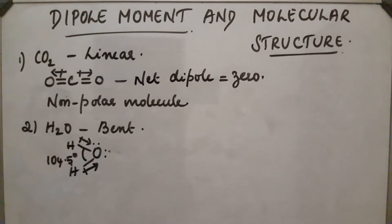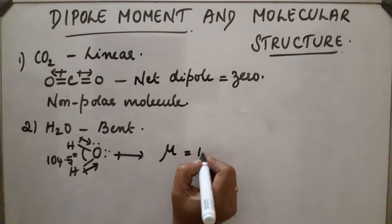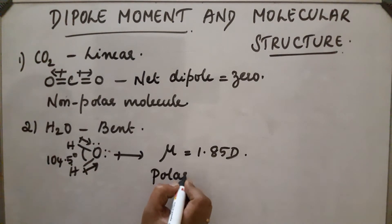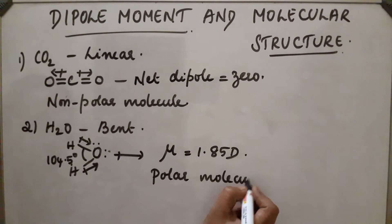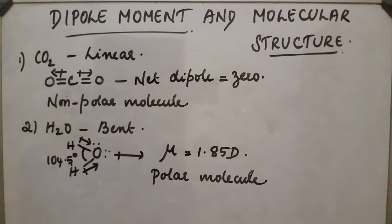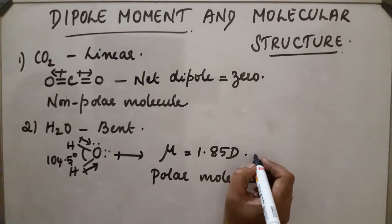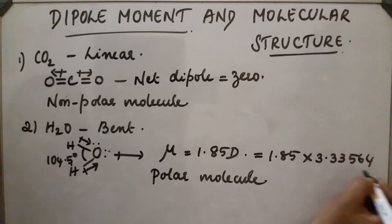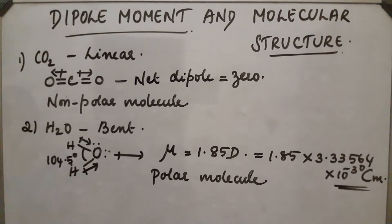So there will be a resultant dipole, and the resultant dipole mu is found to be 1.85 D. So we can say H₂O molecule is a polar molecule with a dipole moment of 1.85 D, or mu = 1.85 × 3.3564 × 10⁻³⁰ Coulomb meter.